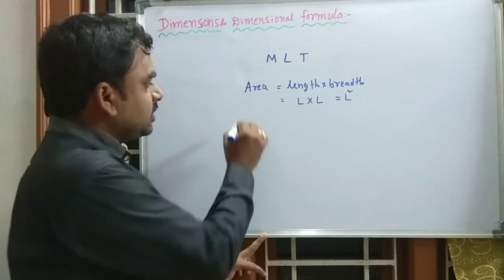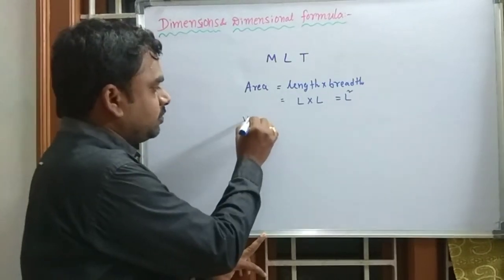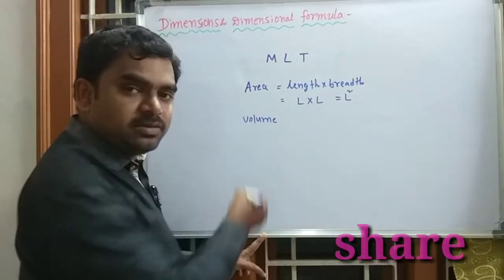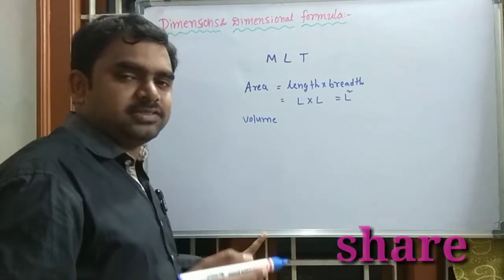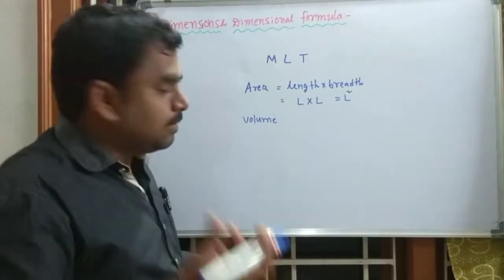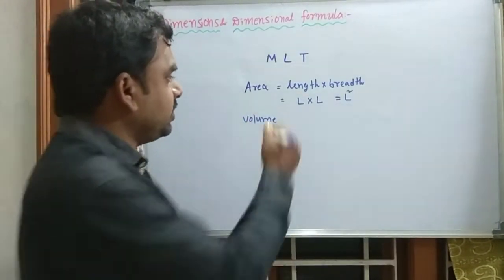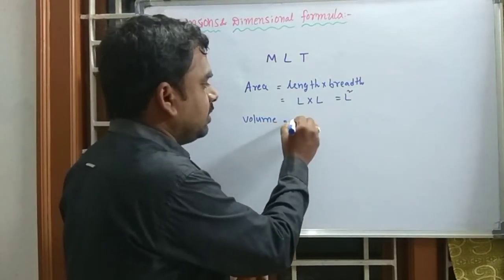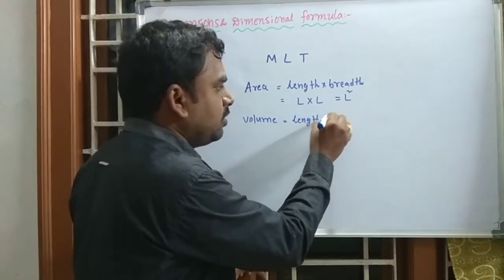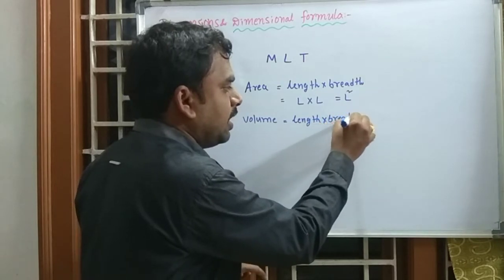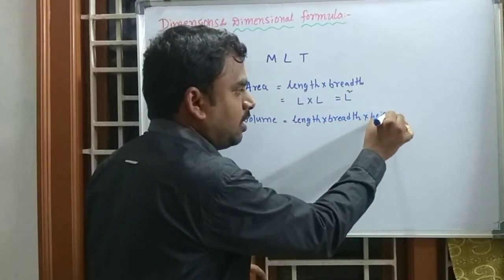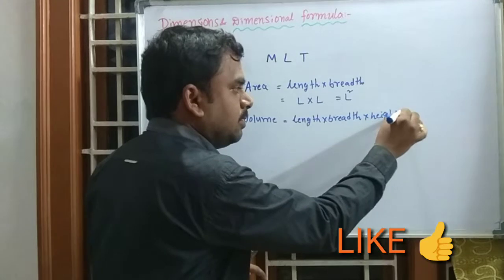Similarly for volume: volume is a derived physical quantity. The formula for volume is length into breadth into height — that is, three lengths multiplied together.